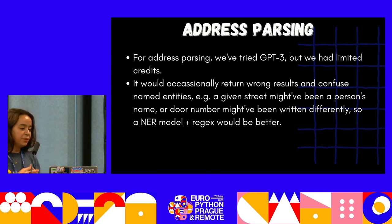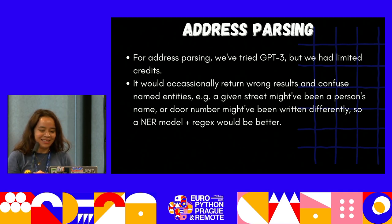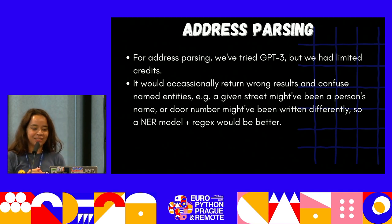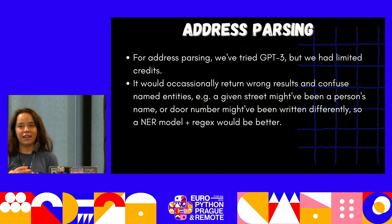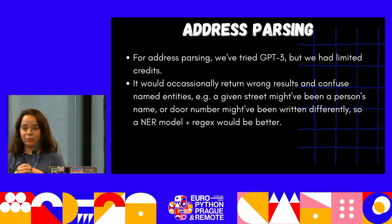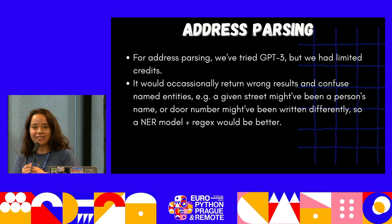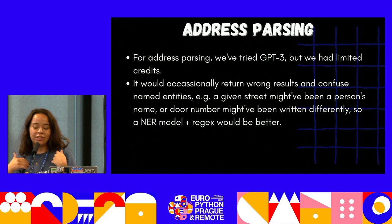For address parsing, we tried GPT-3 but we ran out of credit, and it would occasionally return wrong results and confuse named entities — like confusing an apartment's name with a person's name. My intuition, and what I observed, is that you shouldn't use large generative language models on understanding tasks. It's like cutting bread with a katana — too overkill. You can actually just train your own models in three minutes and they will outperform that case where you are paying a lot of money.